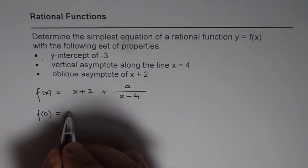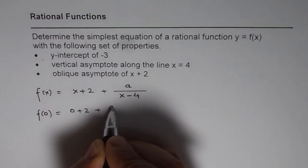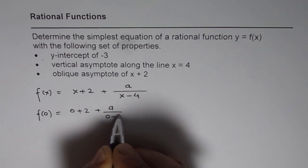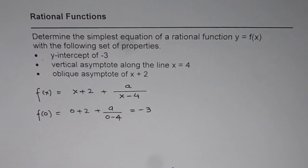So let's substitute 0 here, so we get 0 + 2 plus a over 0 - 4, and this should be equal to -3.